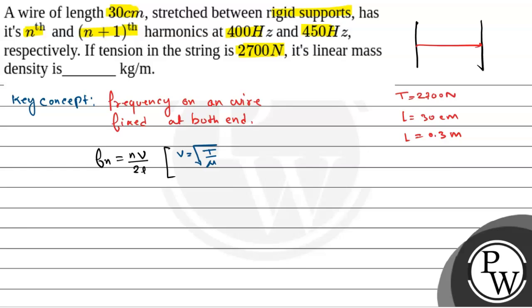T is the tension and mu is the linear mass density. And L is the length of the wire. So we have got mu is equal to linear mass density.